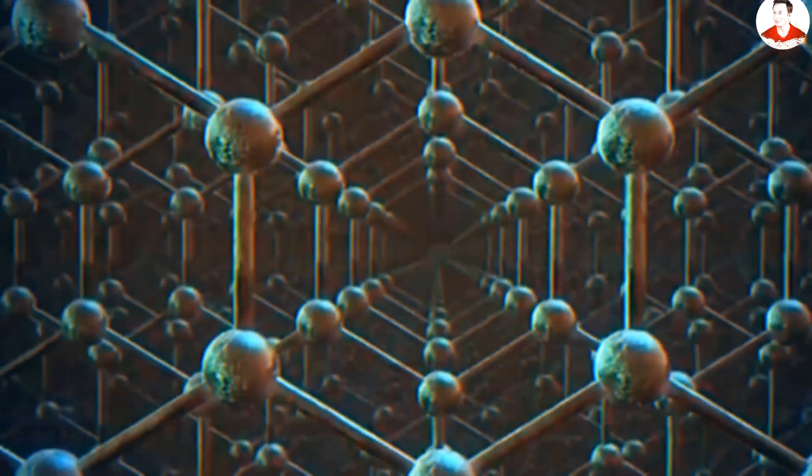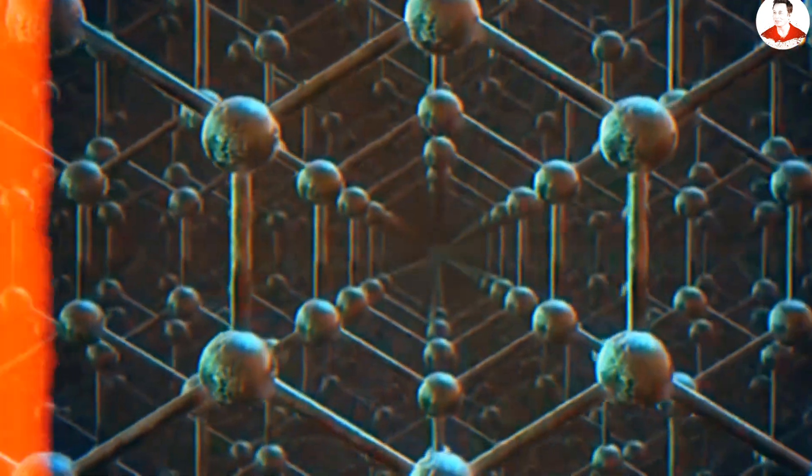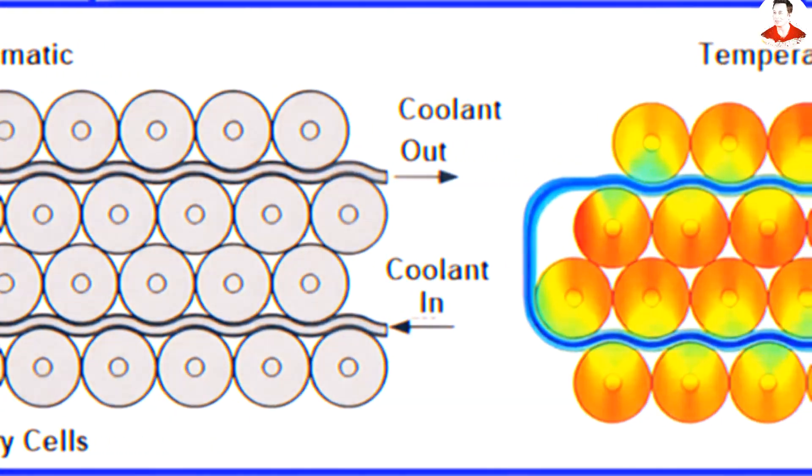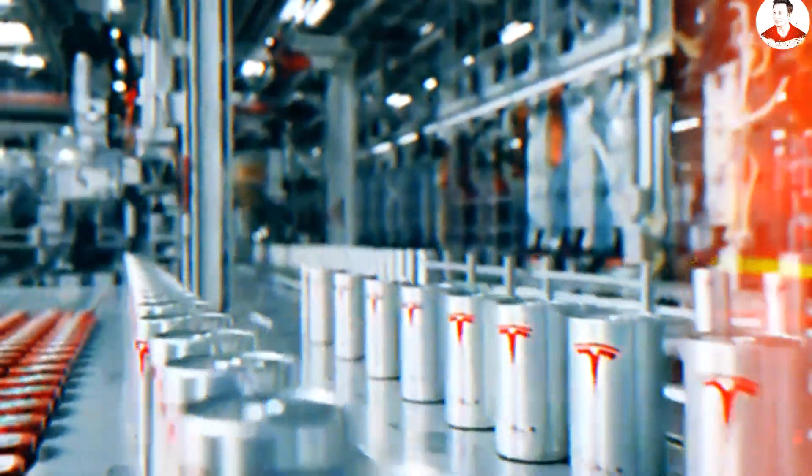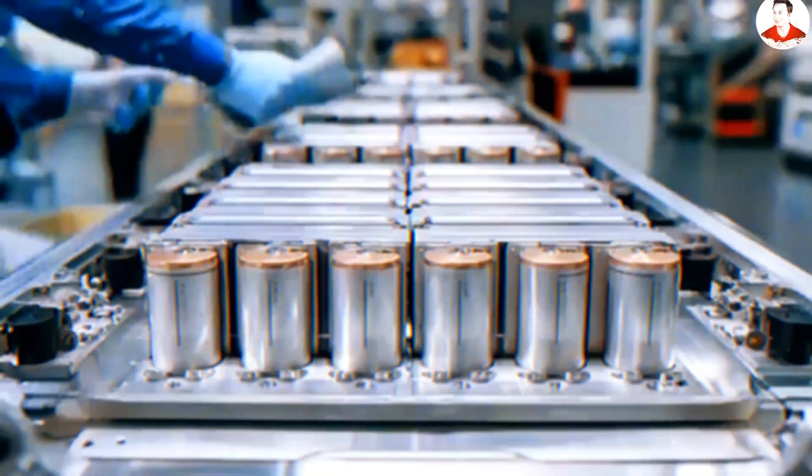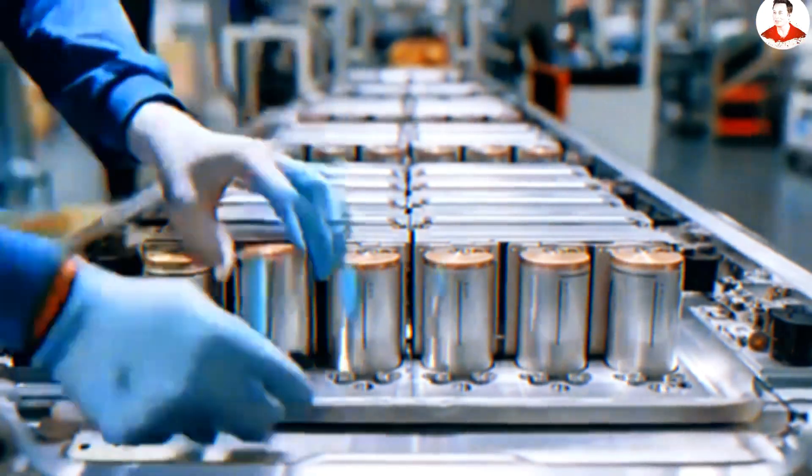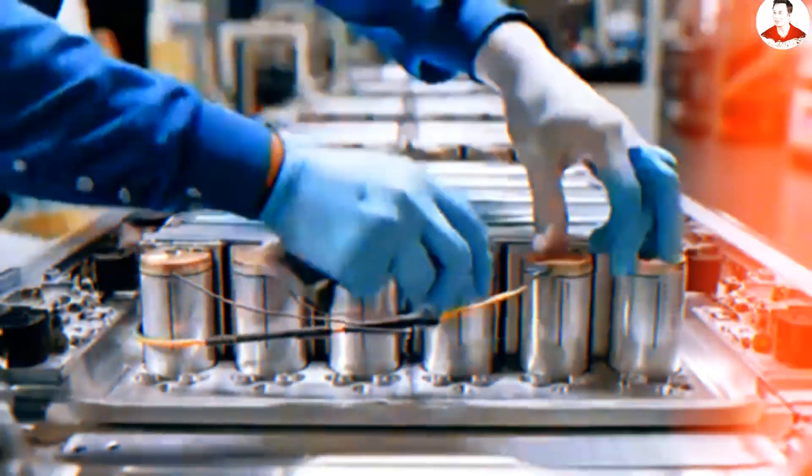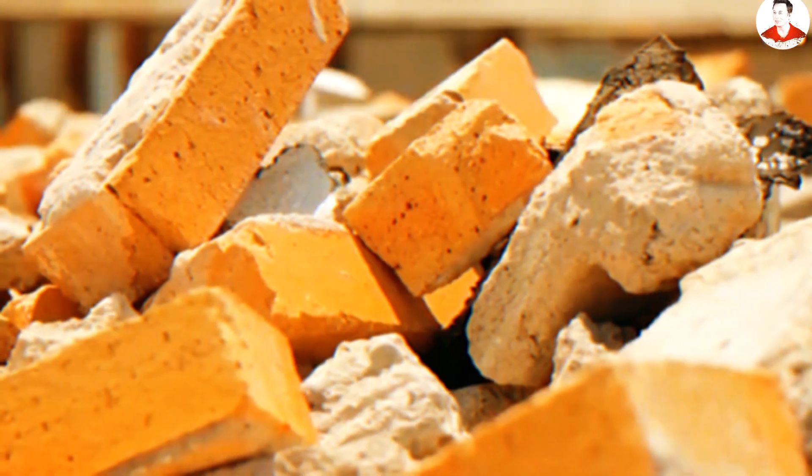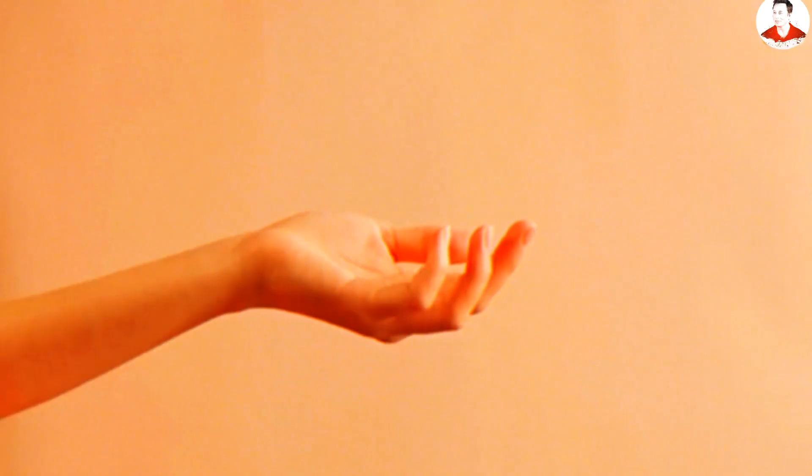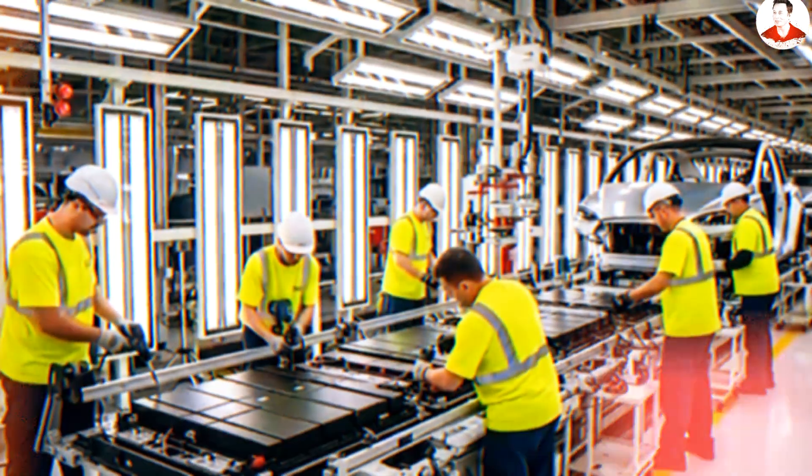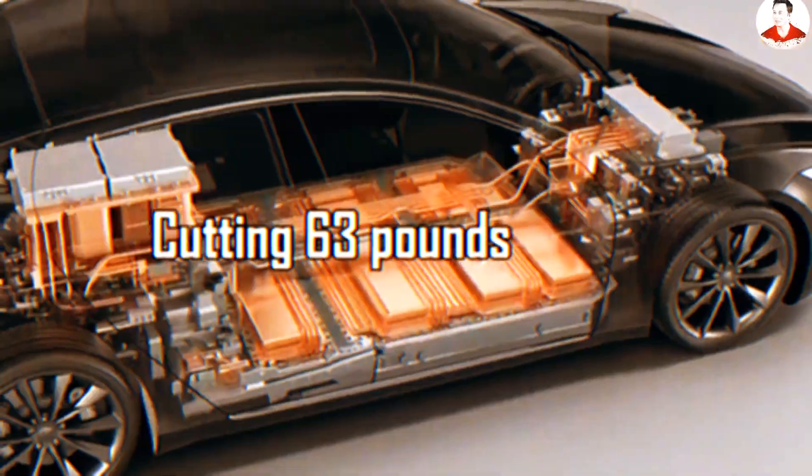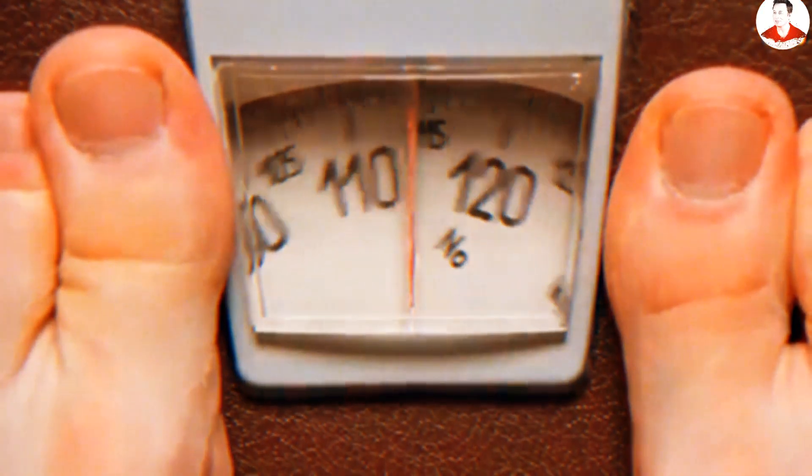Traditional lithium packs waste roughly 40 percent of their weight on non-active material like casing, separators, and coolants. Tesla's new aluminum-ion cells reduce that non-active weight by up to 60 percent based on leaked R&D reports. It's not just swapping materials. It's like turning a brick into a feather without losing a single watt. In early prototypes, Tesla cut pack weight by 463 pounds on a Model 2, which is almost the weight of three adult passengers or a full-size refrigerator.